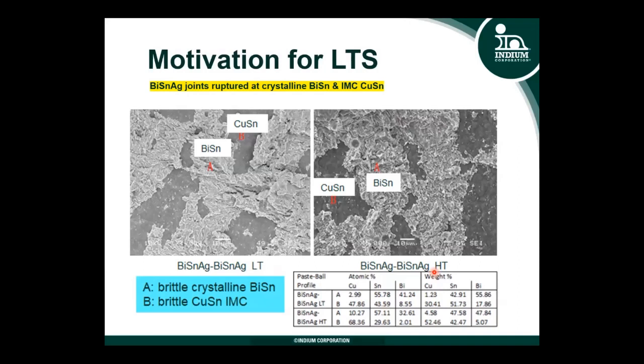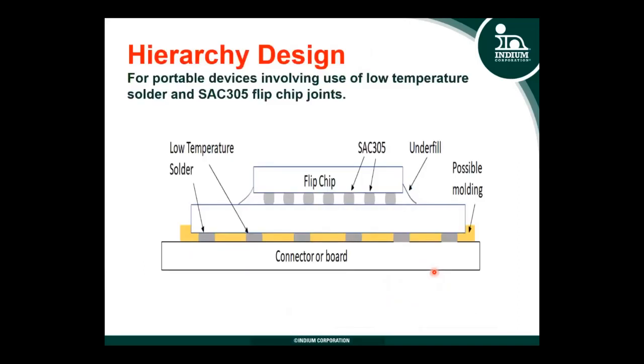Under another condition — bismuth-tin solder with both paste and BGA assembled at higher temperature — similar results were obtained. The solder joint rupture surface showed both copper-tin and bismuth-tin, basically confirming that bismuth-tin solder is good as a low temperature solder but doesn't survive well under drop failure.